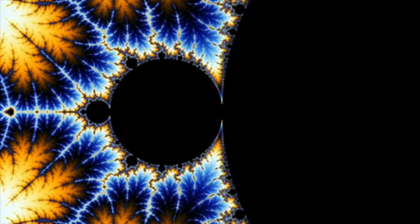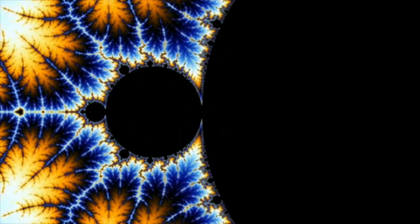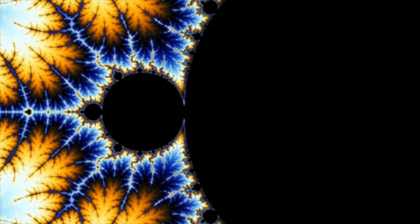Indeed, the Mandelbrot set has been called a catalogue of Julia sets. Its boundary is so extraordinarily complex that it turns out to be two-dimensional, though with zero area.